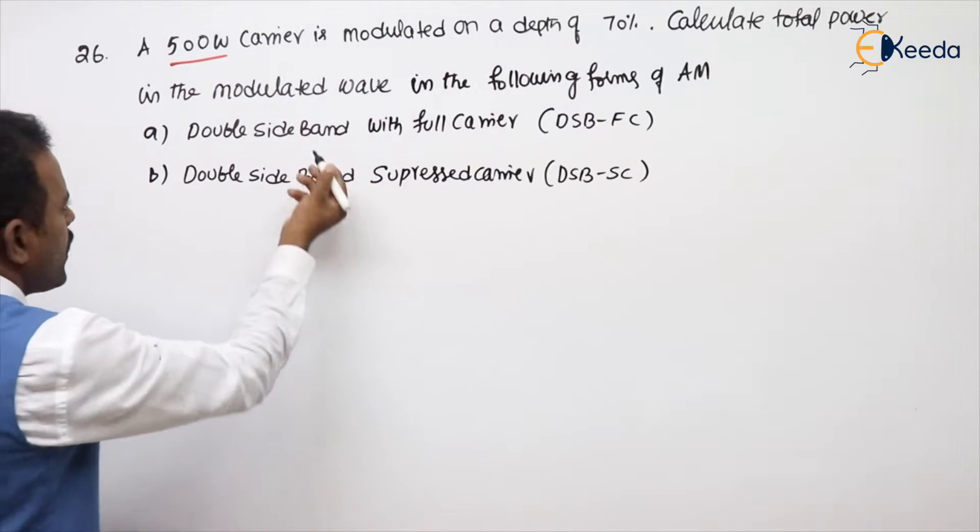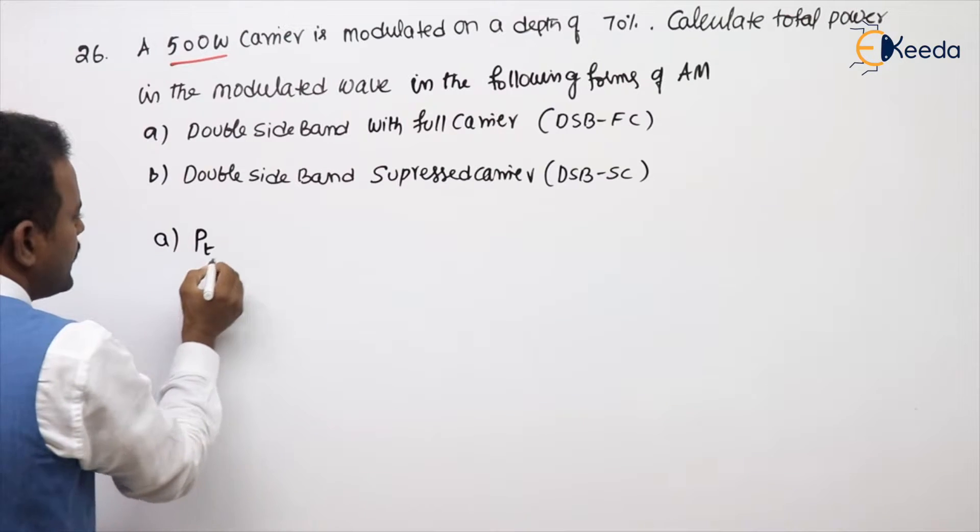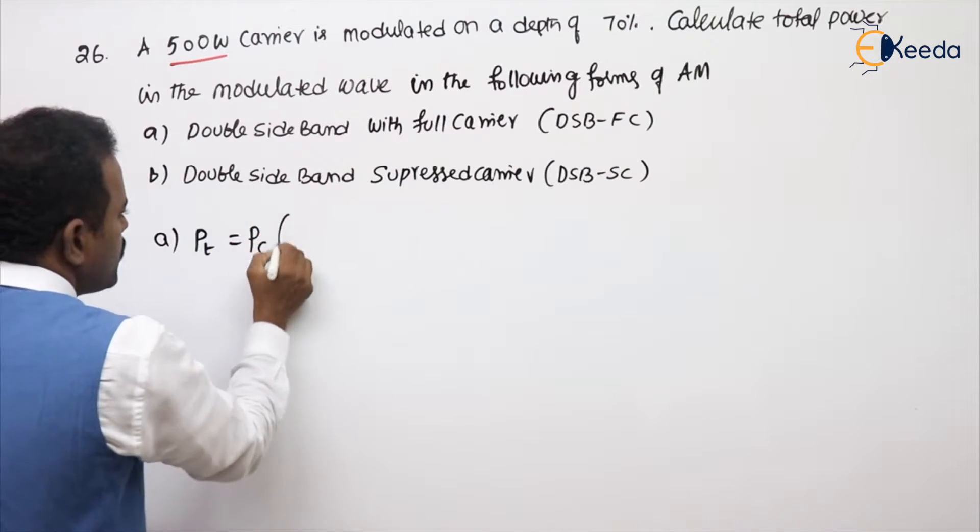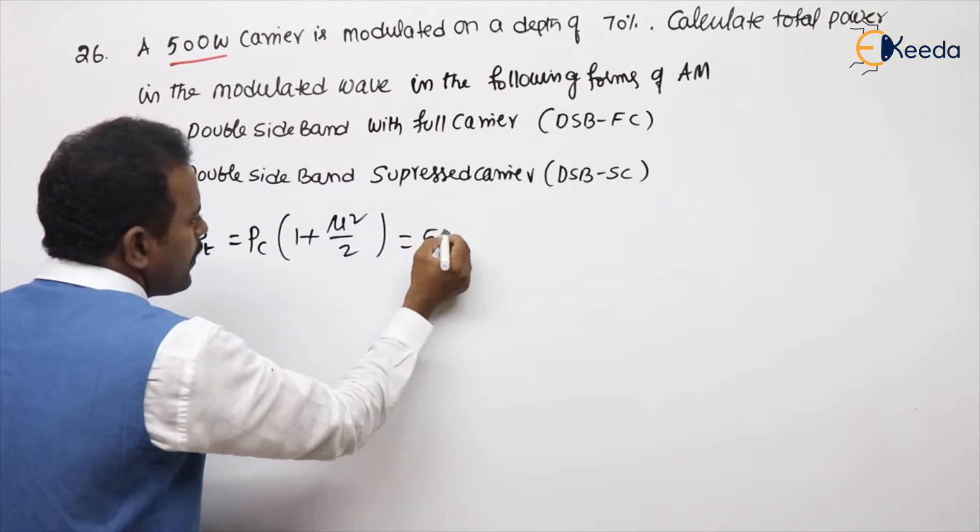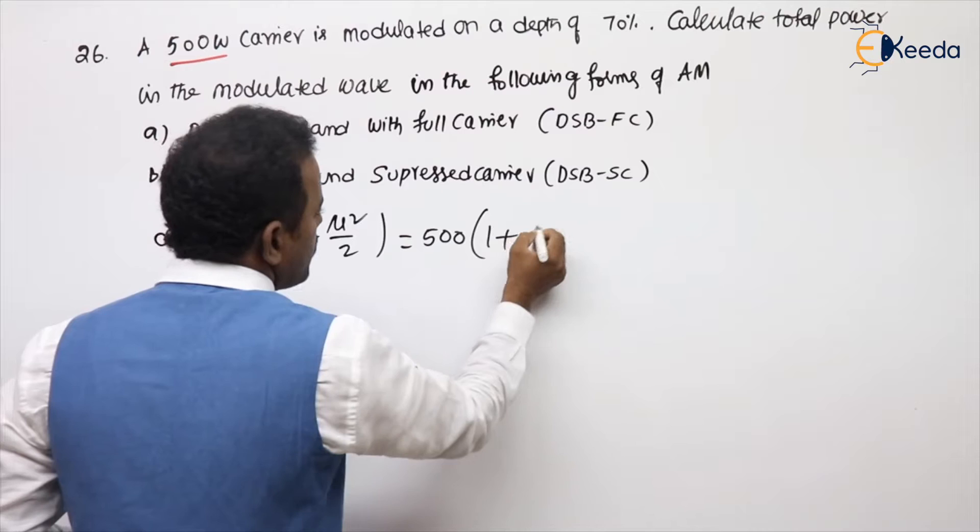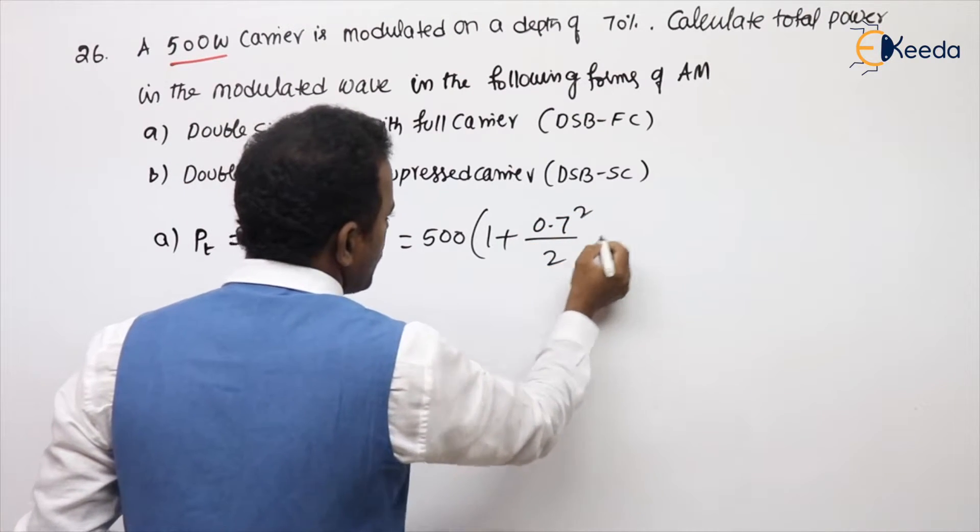What is the formula for total power in DSBFC, that is AM? PC into 1 plus mu square by 2. PC value given 500, 1 plus depth of modulation is given 70%, so 0.7 whole square by 2.